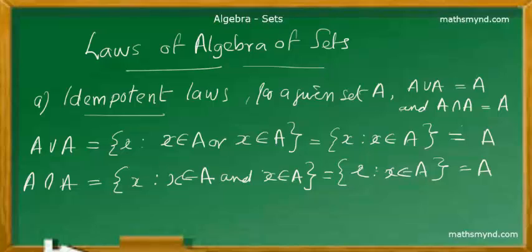Given a particular set A, the union of that set with itself gives the set itself. That's also the case with intersection. A union A equals A, and A intersection A equals A.